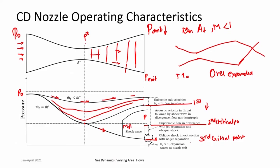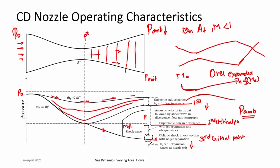If you continue to reduce ambient pressure further, you get perfect expansion until the nozzle exit, where P_e exactly equals the pressure ratio corresponding to the nozzle Mach number. If ambient pressure is reduced further still, the nozzle exit pressure is greater than ambient pressure, and the flow continues to expand outside the nozzle using expansion waves. That operation is called under-expanded operation.